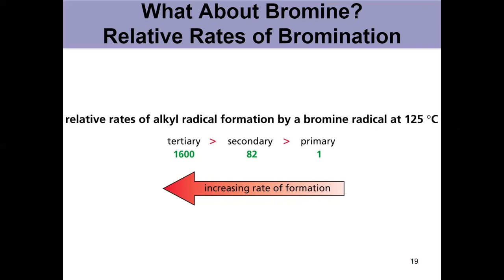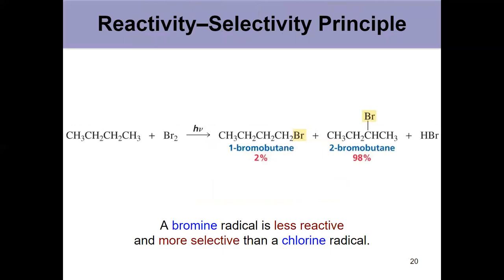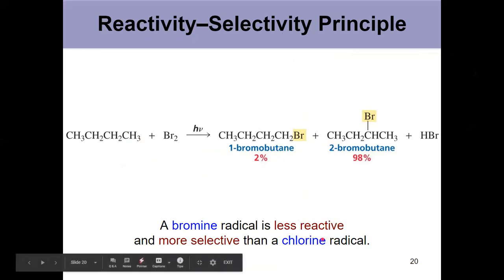Probability and reactivity are really important for chlorination. Here with bromination, not so much. Look at this reaction: instead of the 71-29 split that we saw before with chlorine, here taking butane and bromine gives us 98 to 2. You see that reactivity really outweighs the probability. Even though the primary hydrogen is more probable, we're only getting 2% one-bromobutane. So it's less reactive overall, and that makes it more selective.